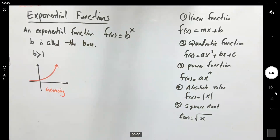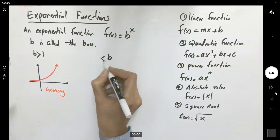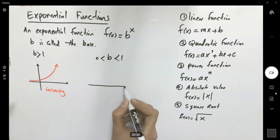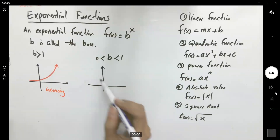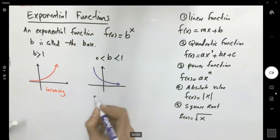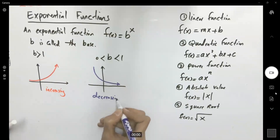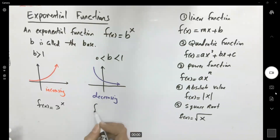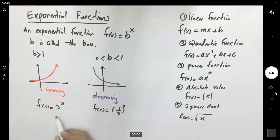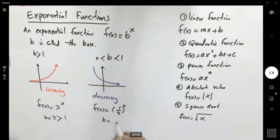However, if your base is between zero and one, you get a decreasing function — the graph starts decreasing from left to right. For example, the difference between f of x equals 3 to the x and f of x equals one-third to the x is that the base in the first case is 3, which is larger than 1, and the base in the second case is one-third, which is between 0 and 1.